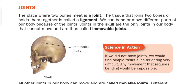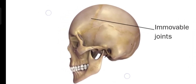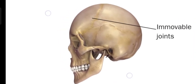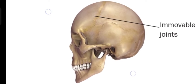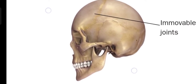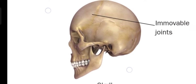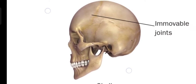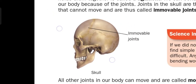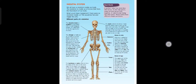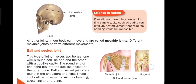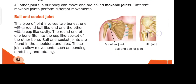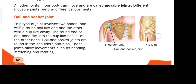Joints in the skull are the only joints in our body that cannot move, and they are called immovable joints. The skull bones are fully fixed. All other joints in our body can move and are called movable joints. Different movable joints perform different movements.